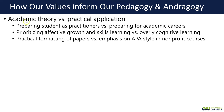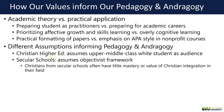So how do our values inform our pedagogy and andragogy? Probably the biggest factor is academic theory versus practical application. We're preparing students as practitioners — roughly 95% of our students — rather than for academic careers. Most Christian higher education is really a caste system where every level prepares people to be doctorates, and that's not what we're trying to do. We prioritize affective growth and skills learning. There are three domains: affective, cognitive, and psychomotor. We also focus on practical formatting of papers appropriate to their job context rather than rigid APA for all programs.